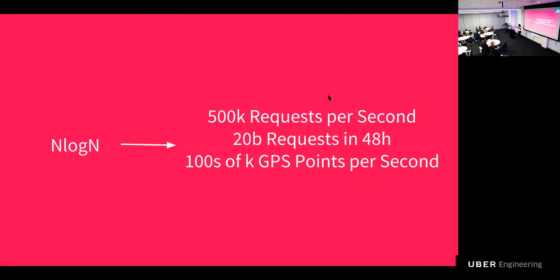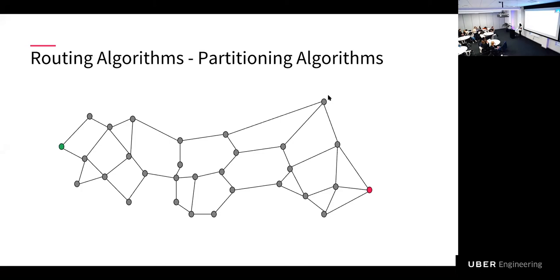And then once the physical scale really sets in, then you have the serving scale, which is the routing engine at Uber serves 500,000 requests per second, which is 20 billion requests in 48 hours. And we deal with hundreds and thousands of GPS response per second. That's a big number. Dealing with something of this sort and developing efficient algorithms is difficult work, and that's something we really enjoy doing here. So obviously, Dijkstra's is not going to work. How can we improvise that and really still cater to the scale? So that's where the paradigm of partitioning comes in.